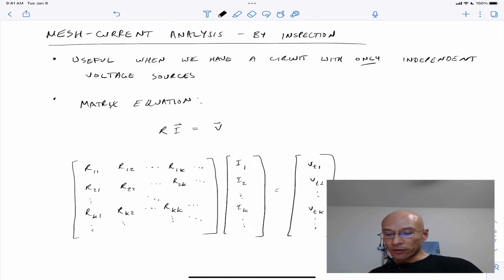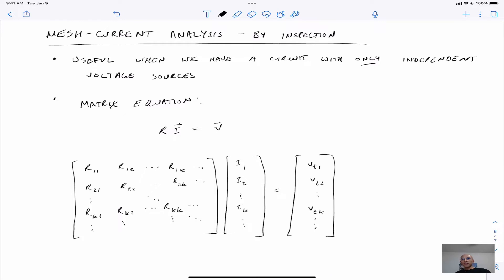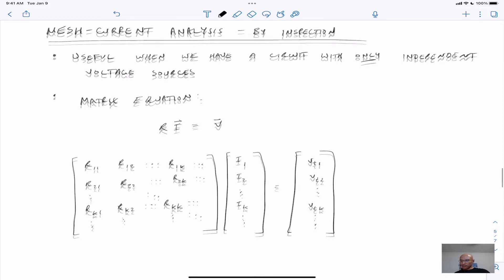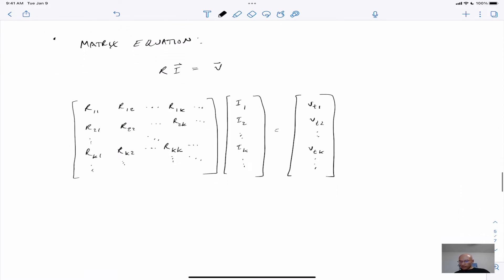In this video, I'll show you how to do mesh current analysis by inspection. This is a lot like node analysis by inspection, but in this case, we're going to be limited to only circuits that have independent voltage sources, so you can't have those diamond-shaped dependent voltage sources. And if you're dealing with current sources, then this is not our first choice. So, let's see how this goes.